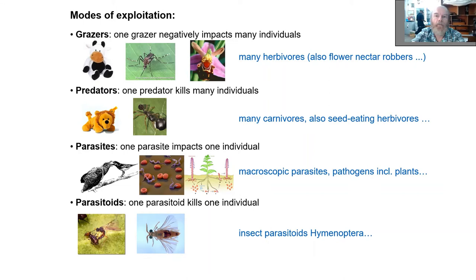Then we have parasites, where one parasite impacts one individual - that also applies to some parasitic plants. And finally parasitoids, which we already discussed last time: one parasitoid typically kills one individual.